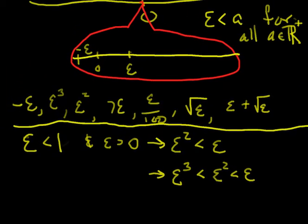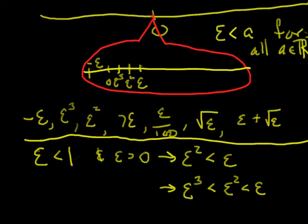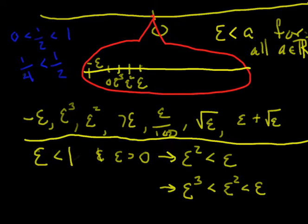So that means I've got epsilon cubed here and epsilon squared there. Now if at first you're thinking: when you square something it gets bigger — consider this. Take any real number between 0 and 1, say one half. If you squared it, you would get one fourth. So zero is less than one half, is less than one, and one fourth — which is one half squared — is still less than one half. We took this number, squared it, and we actually got smaller.